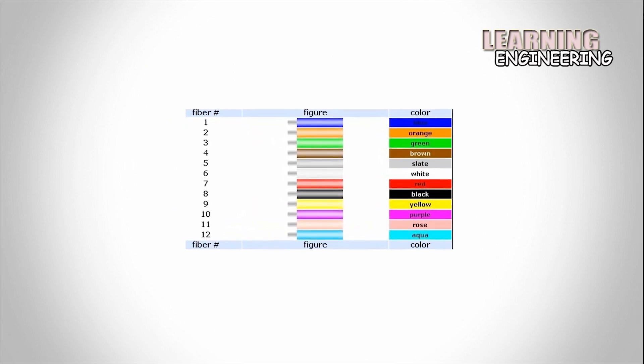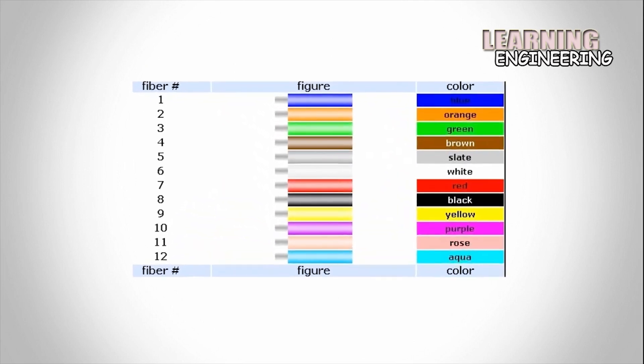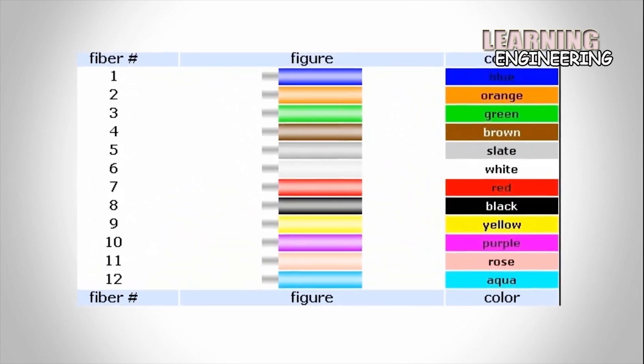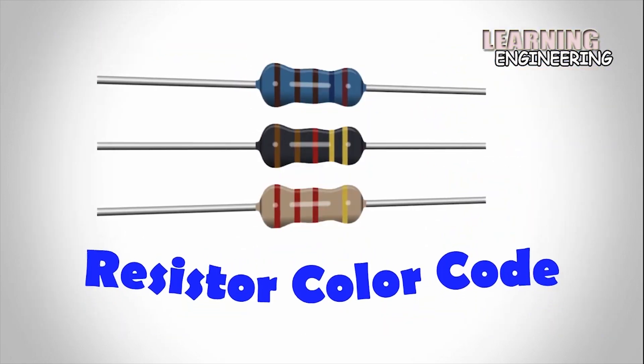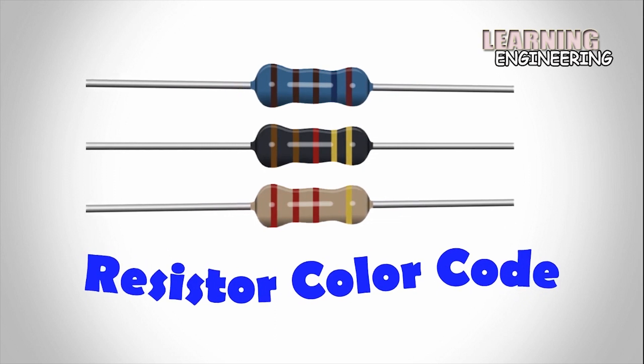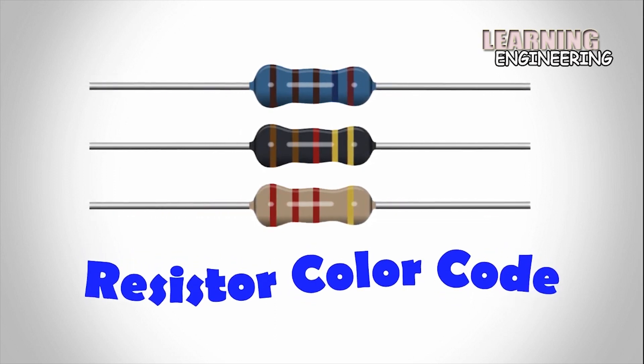A separate code, the 25-pair color code, is used to identify wires in some telecommunications cables. In this video, I will show you how to calculate the color code of this resistor.